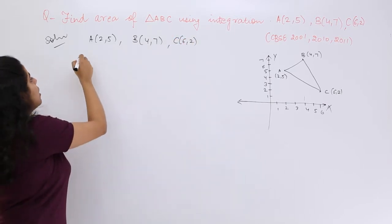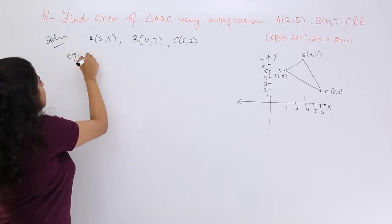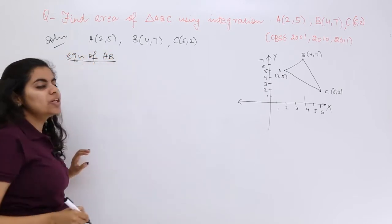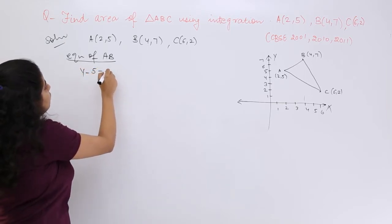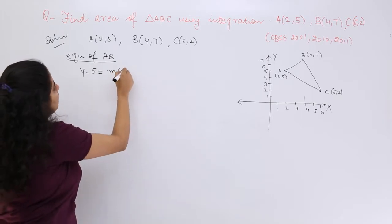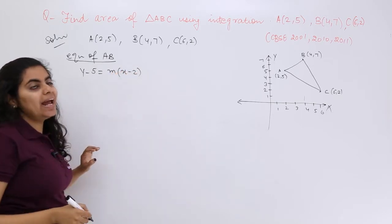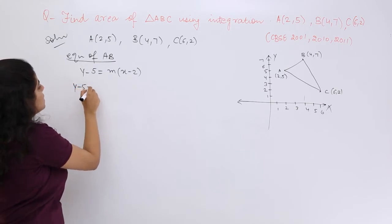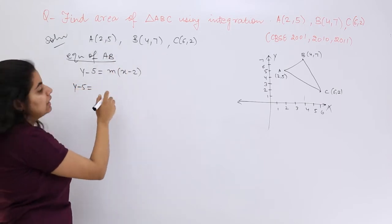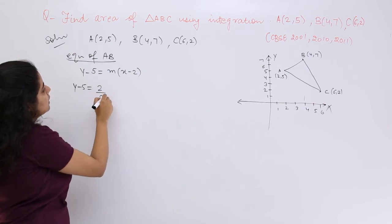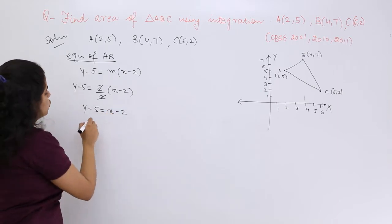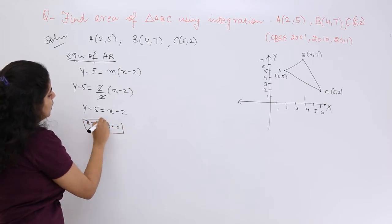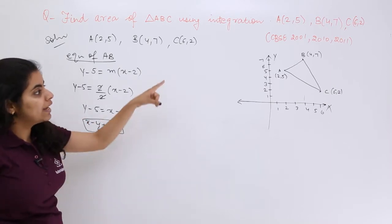What is the area? First, find out the equation of AB. Equation of AB is obtained by the formula y - y₁ = m(x - x₁). Now what is your m? m is nothing but the slope, so y - y₁ = (y₂ - y₁)/(x₂ - x₁) times (x - x₁). So y - 5 = (x - 2), or in short x - y + 3 = 0. This is equation number 1, the equation of AB.